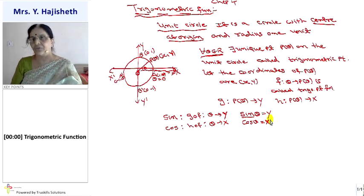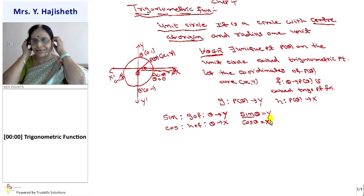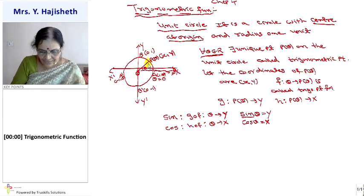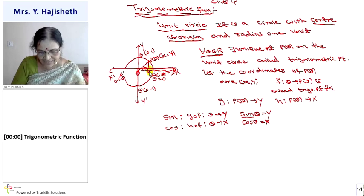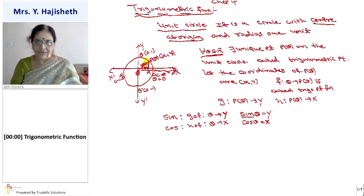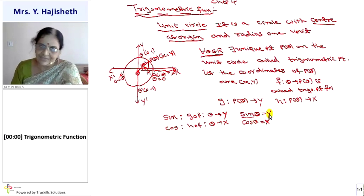In the 10th standard, we used to define sin theta as y/r and cos theta as x/r. Here r is 1 because if we construct a right-angle triangle from P — PM perpendicular to OX — then PM is y, OM is x, and OP is r, but here r is 1. That is why cos theta equals x and sin theta equals y. So from now onwards, sin theta is y and cos theta is x.